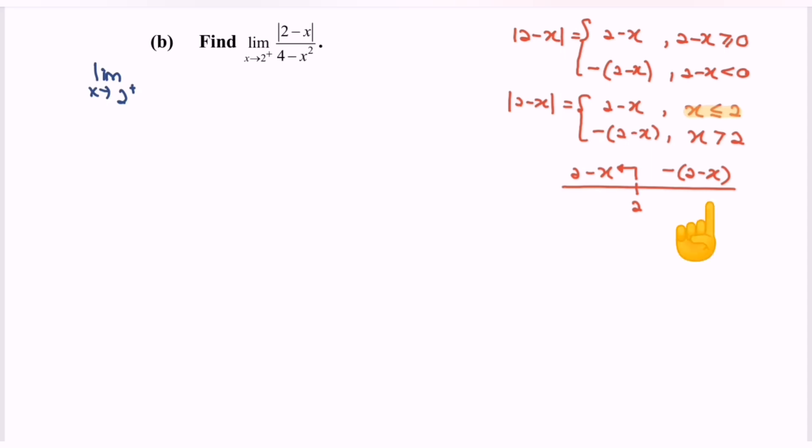The question said 2 from the right, so the function negative bracket 2 minus x will be selected over 4 minus x squared.